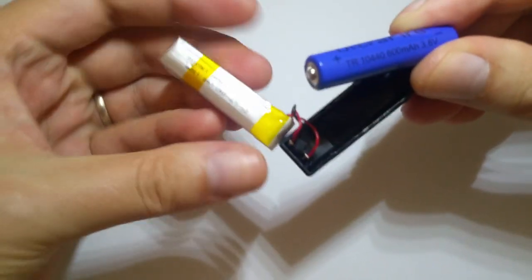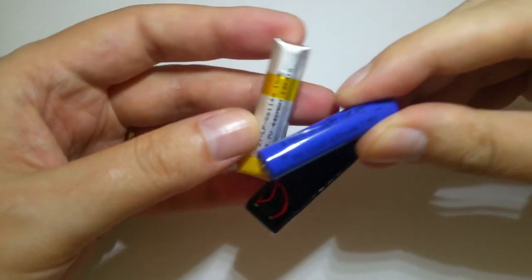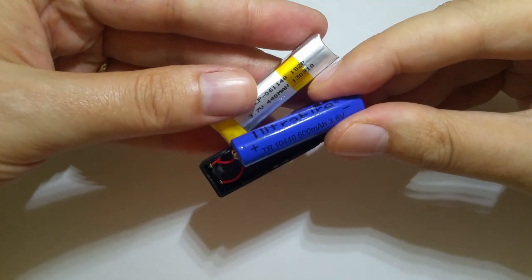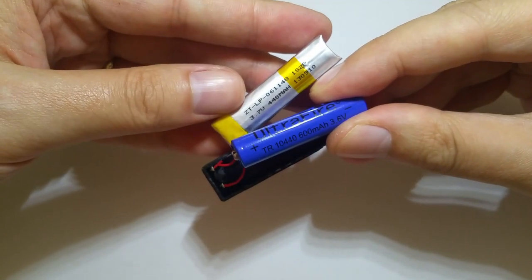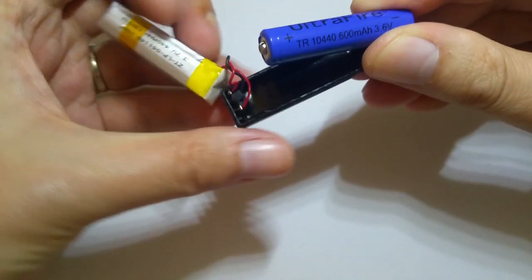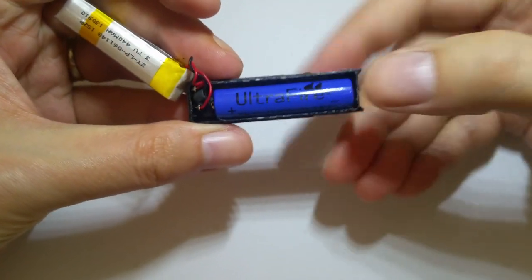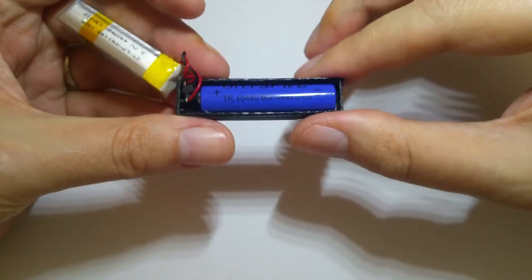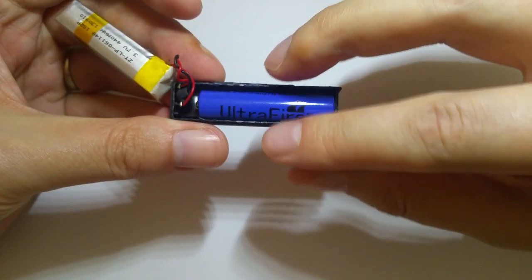This one is 3.6 volts, close enough to the original one, and 600 milliamp hours, which is better than the original. It fits perfectly in the case. It even has some little slack for the extra wire. I'll show you later which wire.